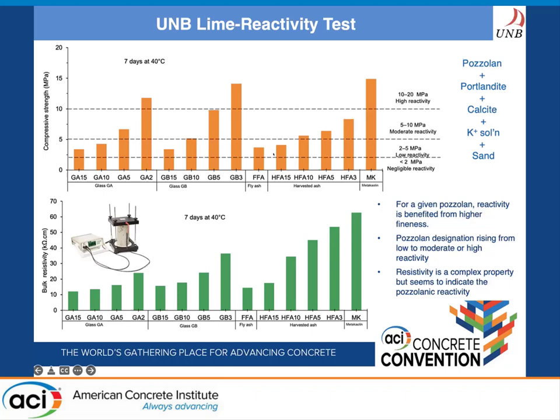Glasses ground to really fine sizes — close to 2 or 3 microns — performed comparably to the highly reactive metakaolin. Similar trends were observed in bulk resistivity: the bulk resistivity of cubes increased as the particle size of the pozzolans decreased. Resistivity is a more complex property than strength because it is impacted by microstructural quality, composition of the microstructure, and pore solution composition. High alkali ground glasses have higher pore solution alkalinity, which means they show lower resistivity. Harvested fly ashes show slightly higher resistivity compared to ground glasses.